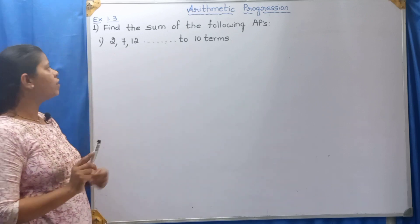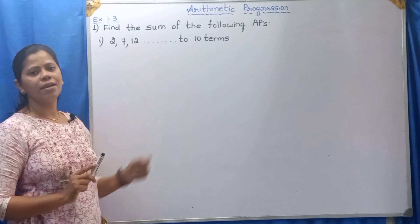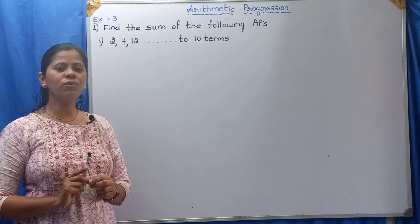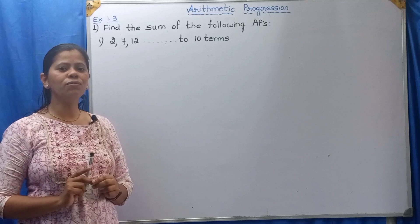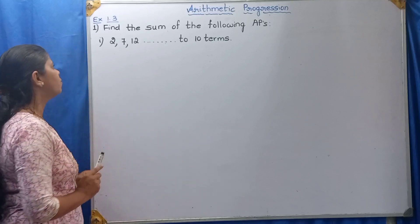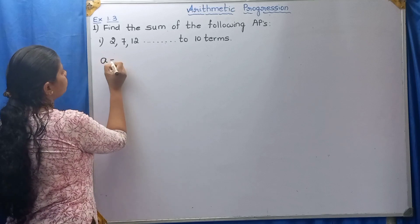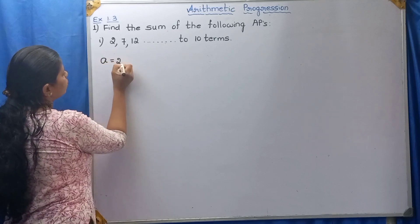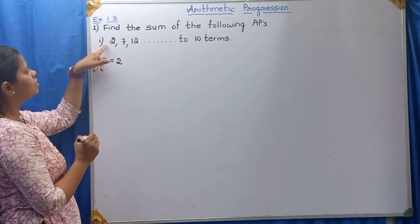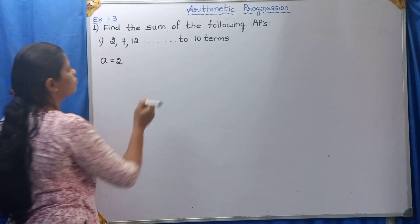We have to find out the sum. We know that we have to use the formula S equals n by 2 into 2A plus n minus 1 into D. Now, A1 is equal to A, which is nothing but 2. The value of A is 2.